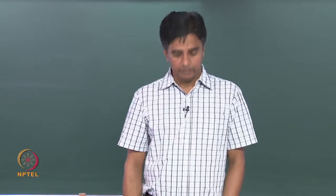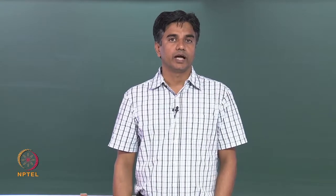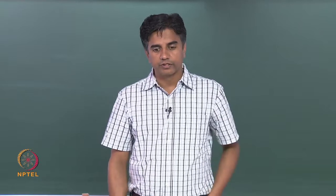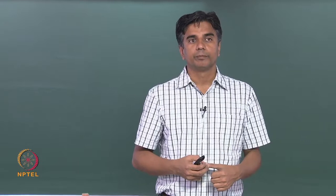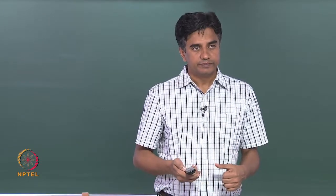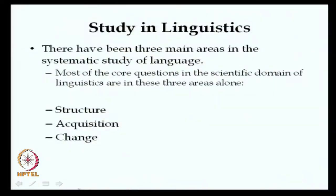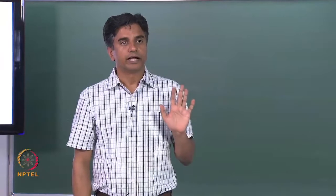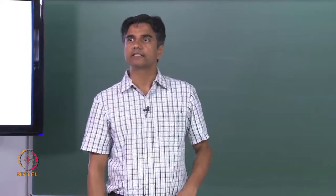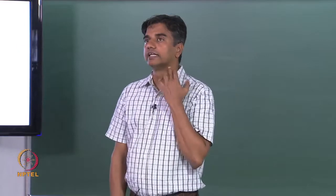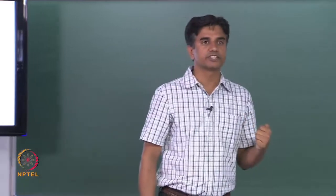Yesterday we looked at how linguistic theory works around acquisition of language — that is I-language — and what constitutes part of what we know as knowledge of language. Today we are going to look at the components of a sentence in a little bit more detail. In the study of language, there are three main areas: structure, acquisition, and change.